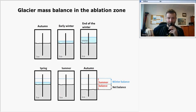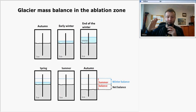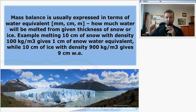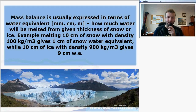In autumn, a hole is drilled in the glacier and an ablation stake is placed there; it remains in place throughout the year. During winter there will be snow accumulation, and at the end of winter there will be the highest accumulation of snow. During spring this snow melts, and in the ablation zone even ice will melt. Mass balance is expressed in terms of water equivalent — how much water melts from a given thickness of snow or ice. For example, melting 10 cm of snow with a density of 100 kg/m³ gives 1 cm of snow water equivalent, while 10 cm of ice with a density of around 900 kg/m³ gives 9 cm of water.